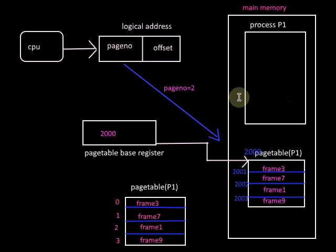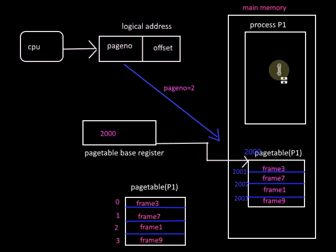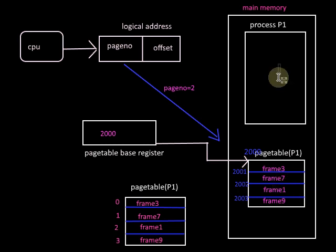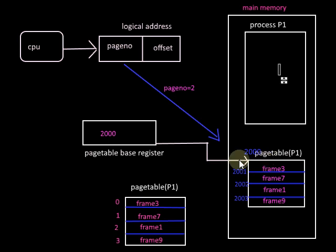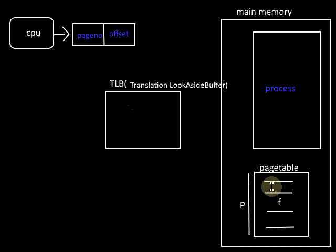The advantage here is that for each context switch we only have to reload the value of one register — the page table base register — so it will not increase the context switch time. However, for accessing a byte within the process we require two memory accesses: one for accessing the page table and getting the frame number, and a second to access the byte within the process. So even though context switch time is decreased, the memory access time is increased. To reduce this, we keep a cache for the page table.